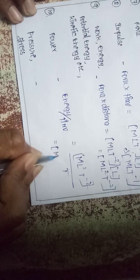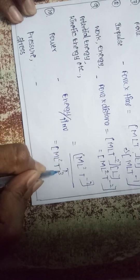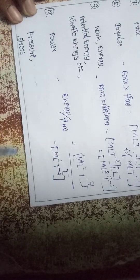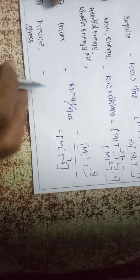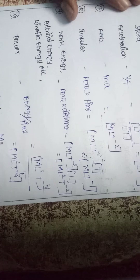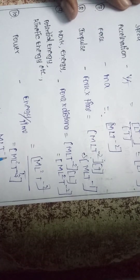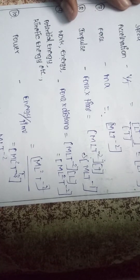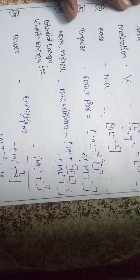Pressure and stress are force by area. Force is M L T⁻², area is L². So M L T⁻² divided by L² gives M L⁻¹ T⁻².